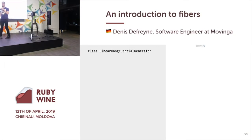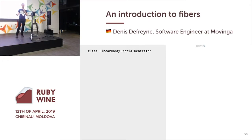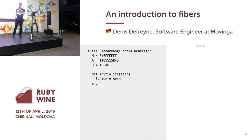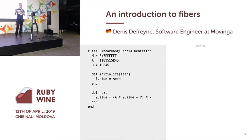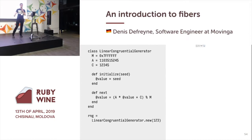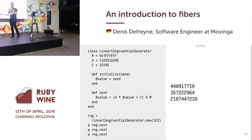Let's write a linear congruential generator — fancy speak for a certain type of pseudo-random number generator. I'll define some magic constants that very smart people have come up with, initialize it with a seed value, then implement a next method which will calculate a new value based on the existing value and the constants a, c, and m. I can create this random number generator with a certain seed value and call next repeatedly, which will spit out more and more random numbers.